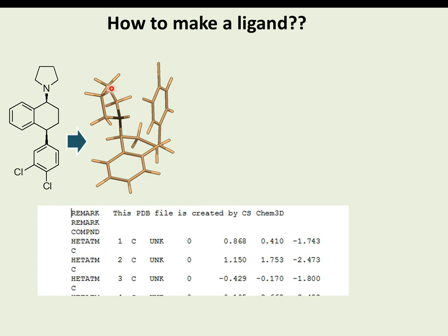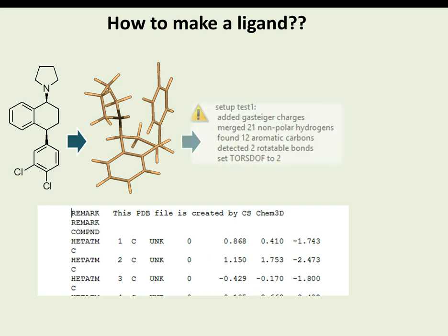However, a 3D structure alone is like a dead molecule — just a simple model. We need to add energy components to each atom to define how it should respond to the external environment. Using a tool like MZL Tools, Gasteiger charges are added and torsional angles are fixed. Ring structures like benzene are rigid, but single bonds such as C–C and C–N are flexible bonds where rotation is possible, allowing the molecule to change conformation during screening.